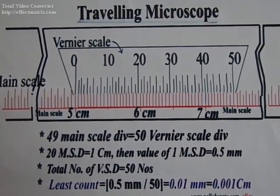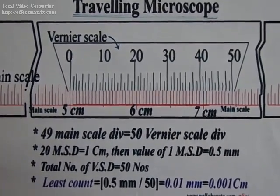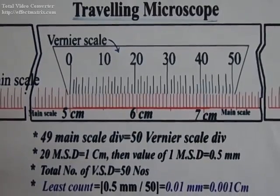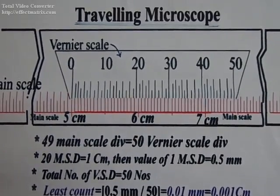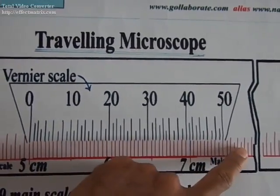Hi, in this video we are about to see how to take reading using a traveling microscope. Before that, let us see what is the least count of the device. Here the red color graduation shows that it is a main scale and this one is a vernier scale.